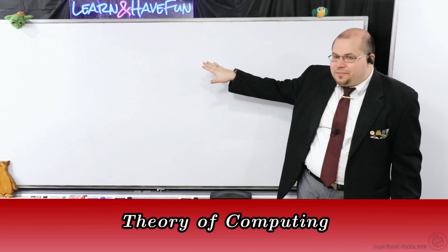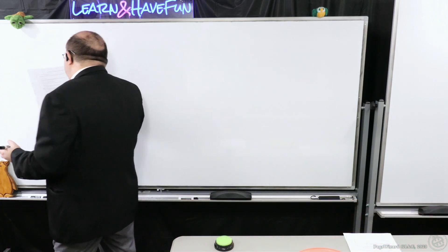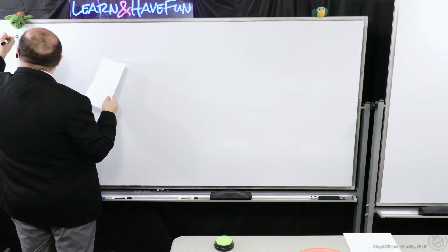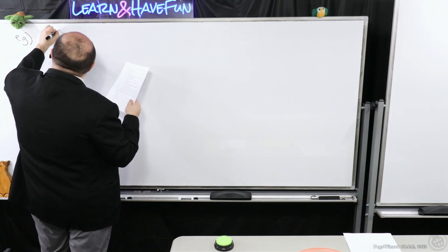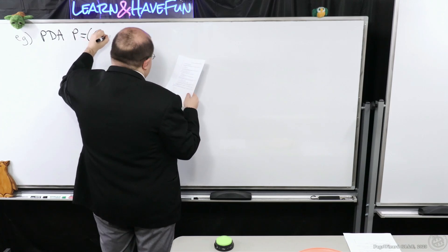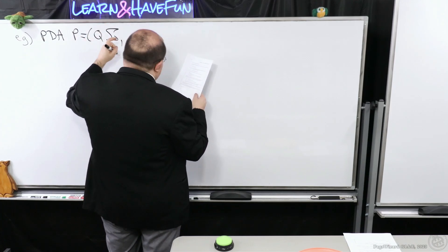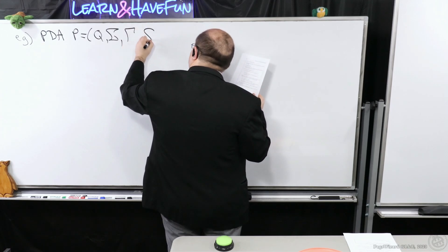I thought it would be a good idea, now that we've seen the definition of a PDA, let's revisit the example we had, and I'm going to define it more formally now. So suppose let's consider PDA P, where we're going to have Q (the set of states), the input symbols, our stack alphabet or stack symbols, transition function...